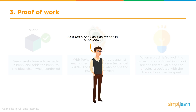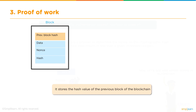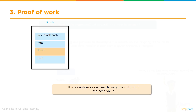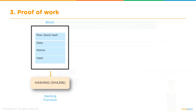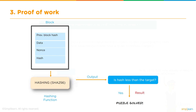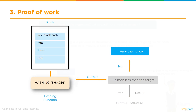Now let's see how proof of work works. The previous block hash stores the hash value of the previous block. Data contains the list of all transactions aggregated in the block. The nonce is the random value used to generate a hash value less than the target, and the hash is the digital signature of the block itself, generated using SHA-256. When the nonce generates a hash with output less than the target, the puzzle is solved and the block is validated. If not, the miner increments the nonce by 1 and rehashes, repeating the cycle until a hash less than the target is found.